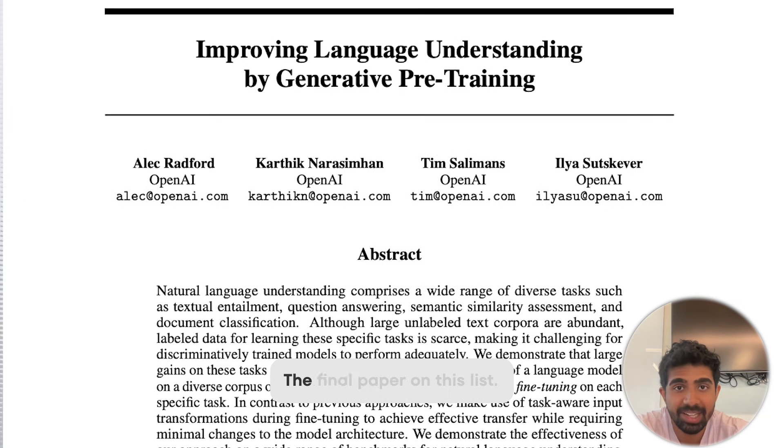Alright, generative pre-training, the final paper on this list. This is a 2018 paper from OpenAI that introduced the idea of a GPT. Apparently, if you train a model on massive chunks of the internet, you get some pretty impressive results. The model learns to read and write. Before this paper, one of the main NLP techniques was to train specialized models.